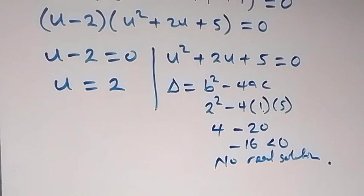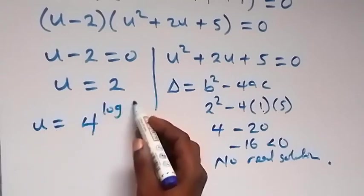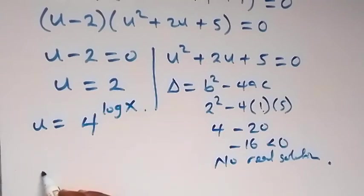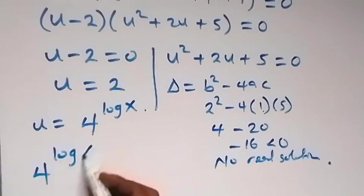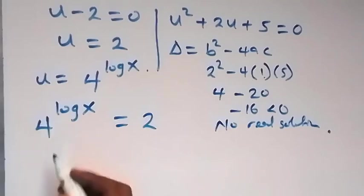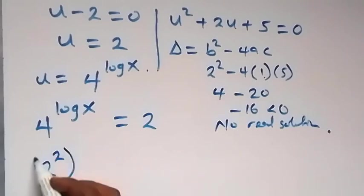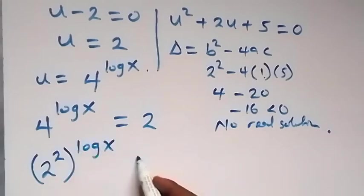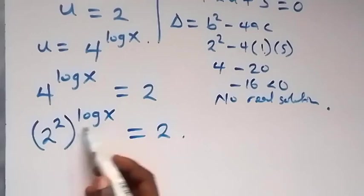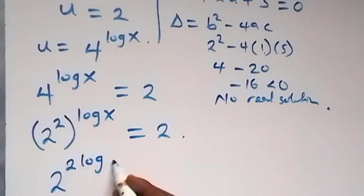Recalling that u = 4 raised to power log x, we now have 4 raised to power log x equals 2. We express 4 as 2 squared, so (2²) raised to power log x equals 2. By the law of indices, this becomes 2 raised to power 2·log x, equals 2.